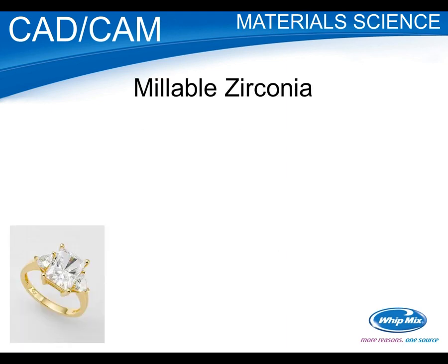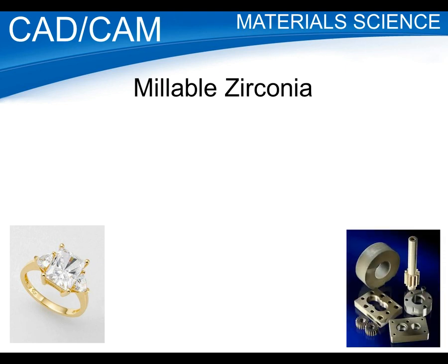Millable zirconia — I first heard of it as cubic zirconia, like a ring. When we talk about zirconia, it really covers a range, starting with cubic zirconia. Zirconia has really unique properties, and because of its strength and abrasion resistance, it's being used more and more for industrial applications.